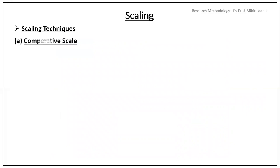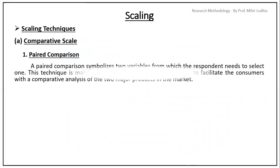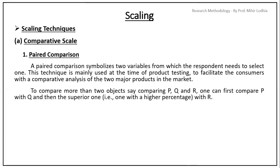In comparative scale, number one is paired comparison. A paired comparison symbolizes two variables from which the respondent needs to select one. This technique is mainly used at the time of product testing to facilitate the consumers with the comparative analysis of the two major products in the market. To compare more than two objects, say comparing P, Q and R, one can first compare P with Q and then the superior one with R.